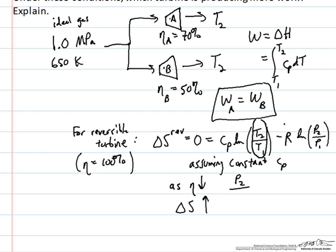And for delta S to go up, with T2 over T1 being held fixed, as it is in this problem, then therefore P2 over P1 has to go down. And since P1 is fixed at 1 megapascal in this problem, this means that as the efficiency goes down and the entropy goes up, therefore the final pressure goes down.